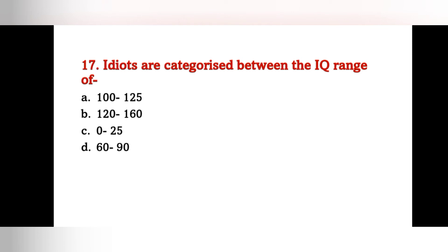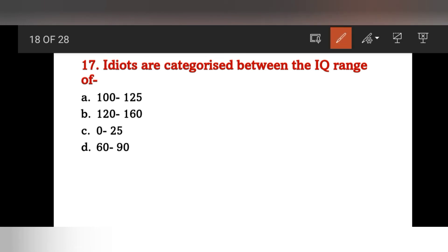Idiots are categorized between which IQ range? The answer is C — 0 to 25. That is the IQ range for the idiot category.